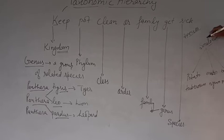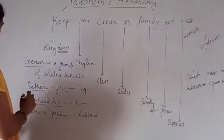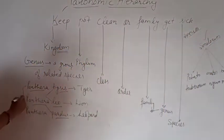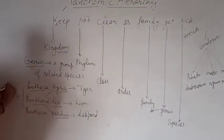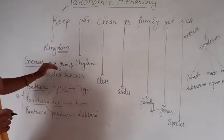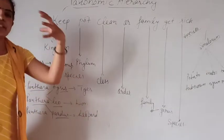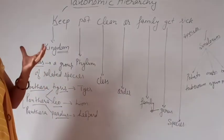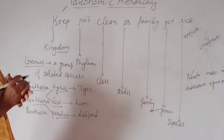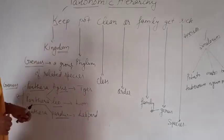So Solanum and Panthera each represent a genus — a group of related species sharing common characteristics.